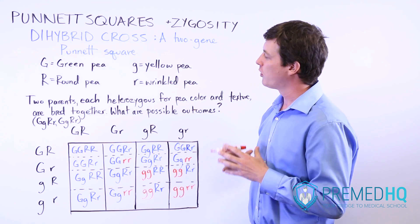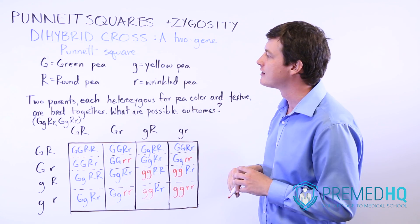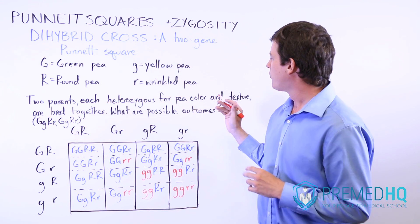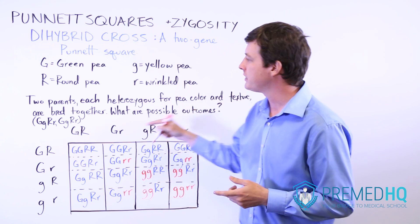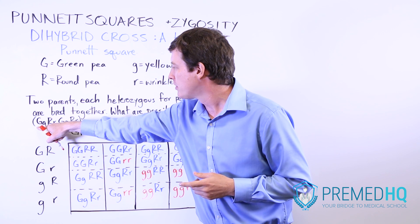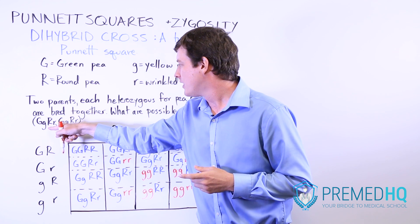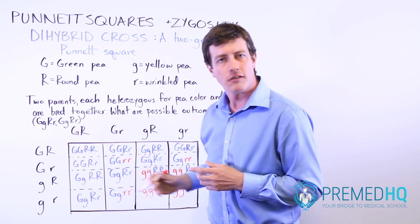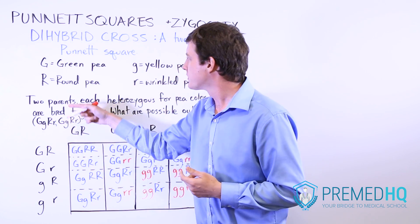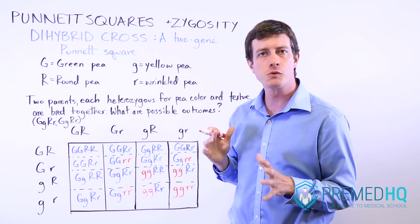The question here — keeping it simple and showing the versatility of the dihybrid cross — is that we have two parents, each of whom is heterozygous for pea color and for texture. They're heterozygous for color, so they have one capital G and one lowercase g, and they have one capital R and one lowercase r for texture. Because of the dominant nature of the capital letters, both parents are going to be green and round pea plants.